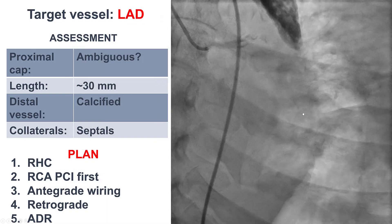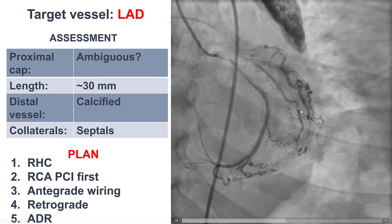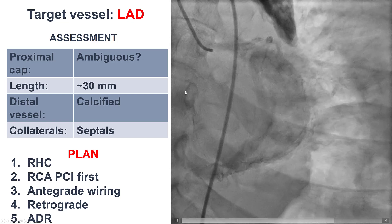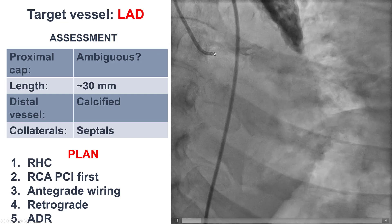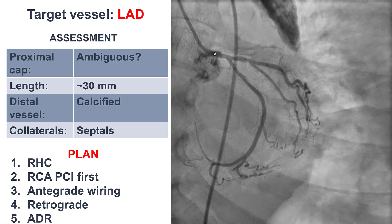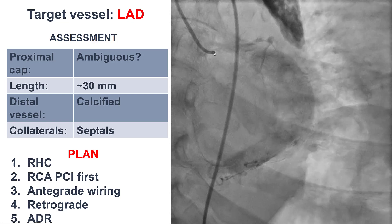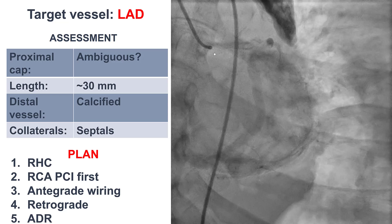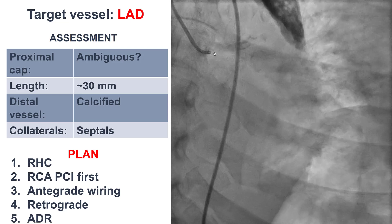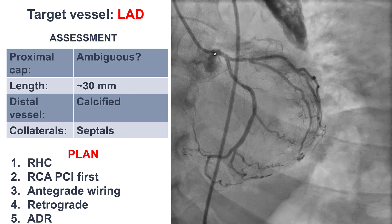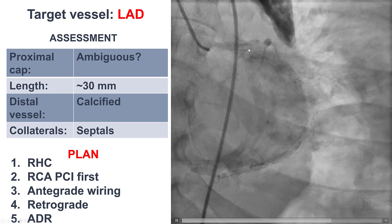The patient has two-vessel coronary artery disease. She was evaluated by cardiothoracic surgery, but because of her previous cancer history and previous chest radiation therapy, she was not deemed a good surgical candidate and was referred for PCI. She had two target vessels: the right coronary artery and the LAD CTO.